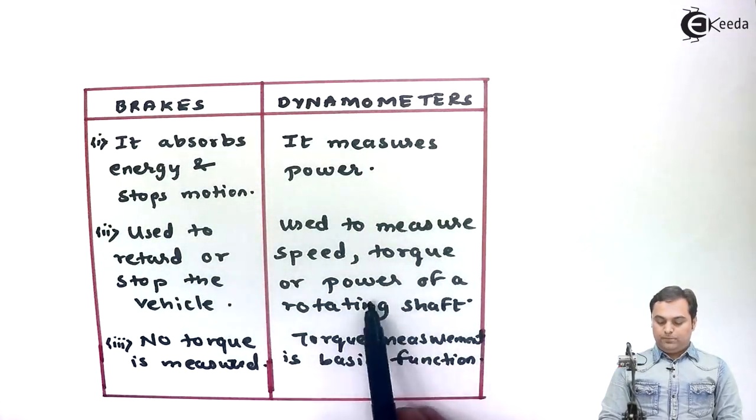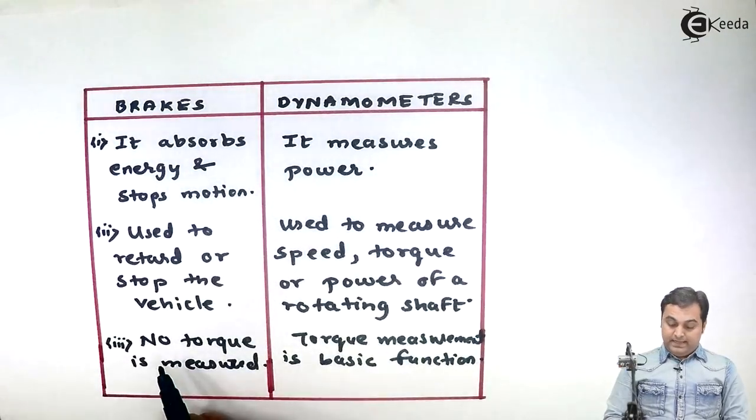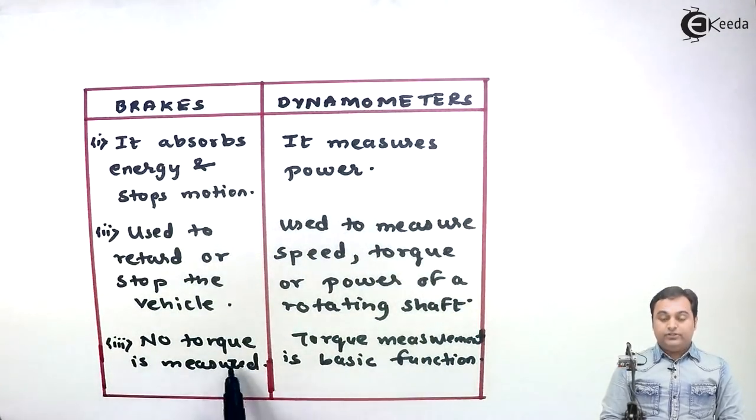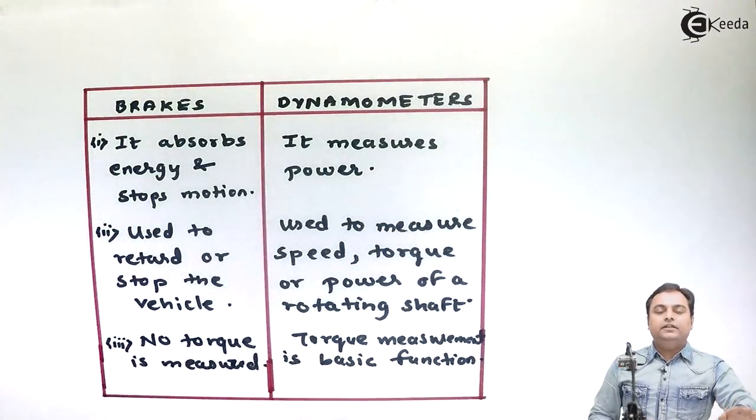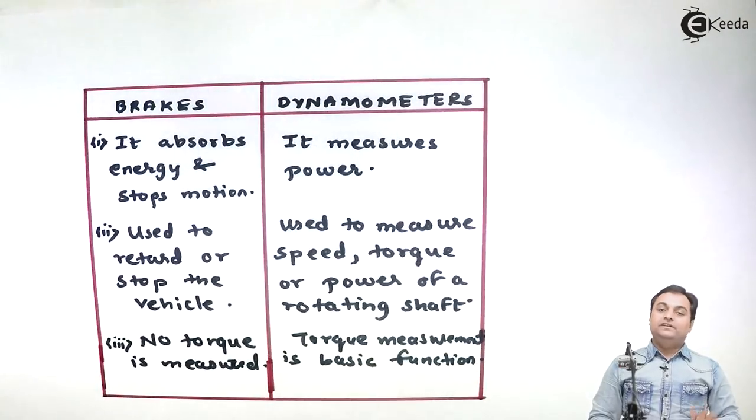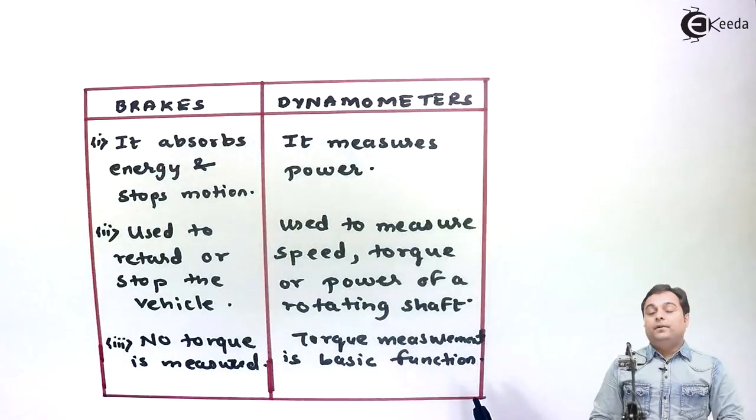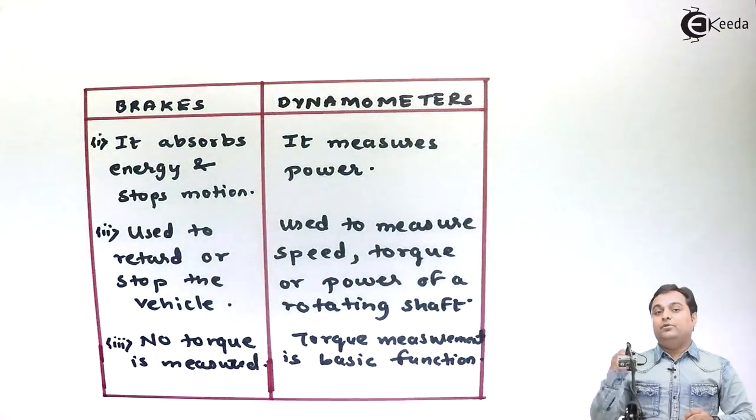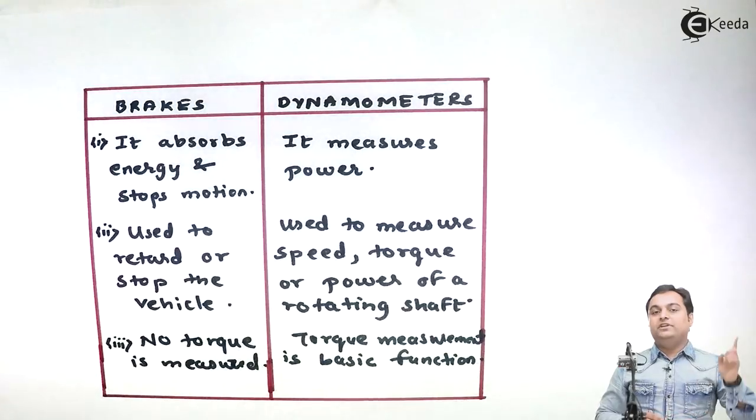Next, in brakes there is no torque measurement. In brakes it will just stop the vehicle, it won't measure any torque. But in dynamometers, torque measurement is the basic function. You cannot say a dynamometer is a device which just stops the motion. It has to measure power. Power measurement is basic function.